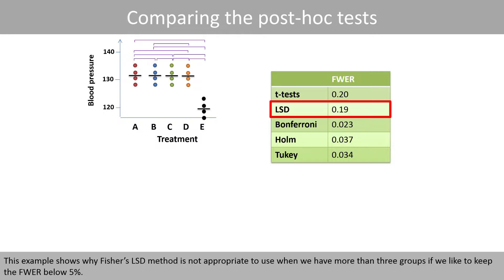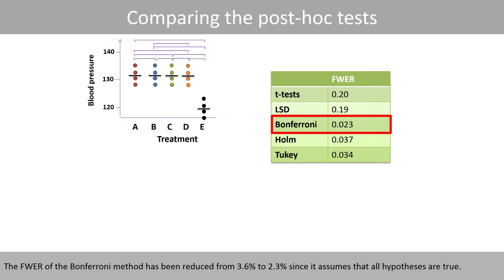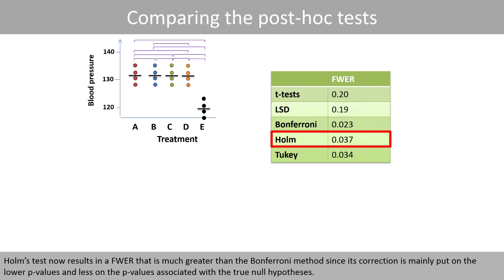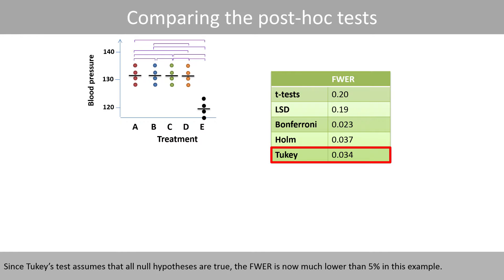This example shows why Fisher's LSD method is not appropriate when we have more than three groups if we want to keep the family-wise error rate below 5%. The family-wise error rate of the Bonferroni method has been reduced from 3.6% to 2.3% since it assumes all hypotheses are true — p-values are adjusted by a factor of 10 even though only 6 hypotheses are true. Holm's test results in a family-wise error rate much greater than Bonferroni since its correction is mainly applied to the lower p-values and less to p-values associated with true null hypotheses. Since Tukey's test assumes all null hypotheses are true, the family-wise error rate is now much lower than 5% in this example.